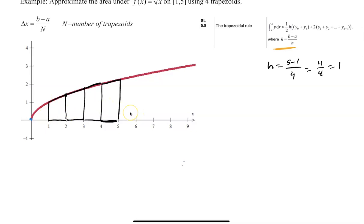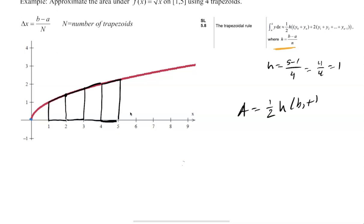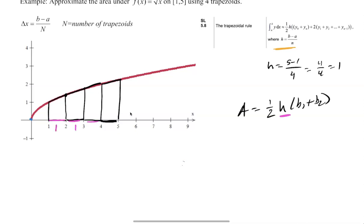Don't forget our trapezoid formula: area = (1/2) × height × (base 1 + base 2). Our height is 1 for all four trapezoids. The heights are 1, 1, 1, 1 — always 1 in this case. Our bases are what change.